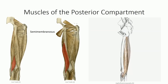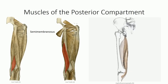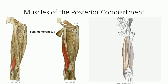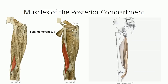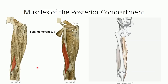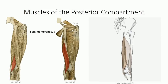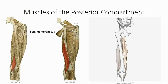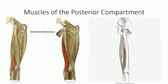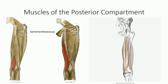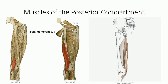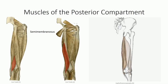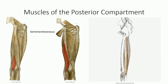Deep to the semitendinosus is the semimembranosus muscle. Its name is the result of its larger and more distinct tendon, which lies both medial and lateral to the tendon for semitendinosus. Both of these tendons can be palpated on the medial side of the knee, particularly when the muscles are actively contracting. The semimembranosus projects deep to the semitendinosus to insert inferior to the medial condyle of the tibia.